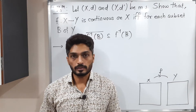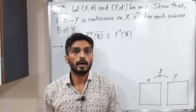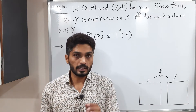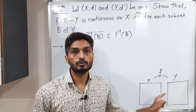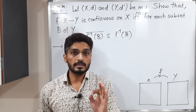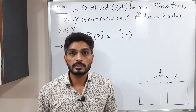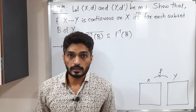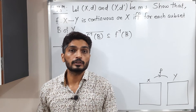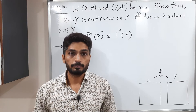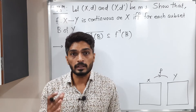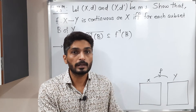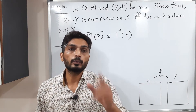Let us discuss this very important result. In this result we have two metric spaces X and Y. F is a function defined from X to Y. This result says the function f is continuous if and only if that condition is satisfied — meaning it gives an equivalent definition of a continuous function. When we have an if and only if, we assume the first part and prove the second, then conversely assume the second part and prove the first.